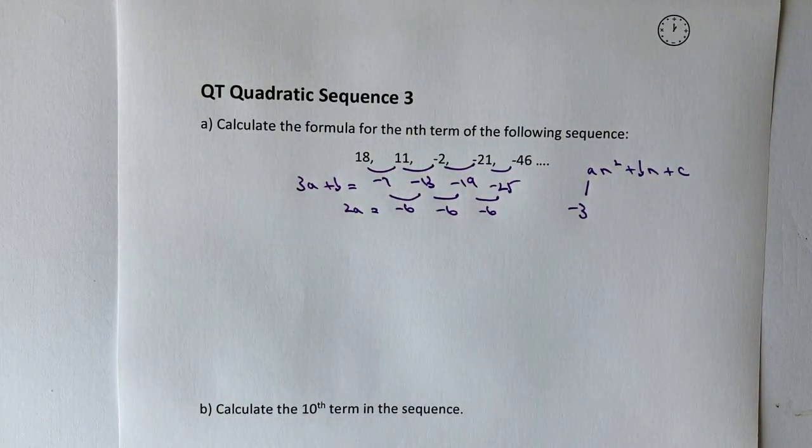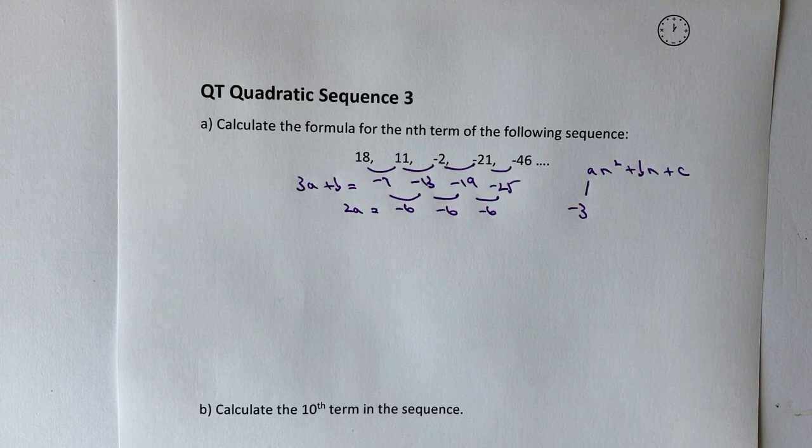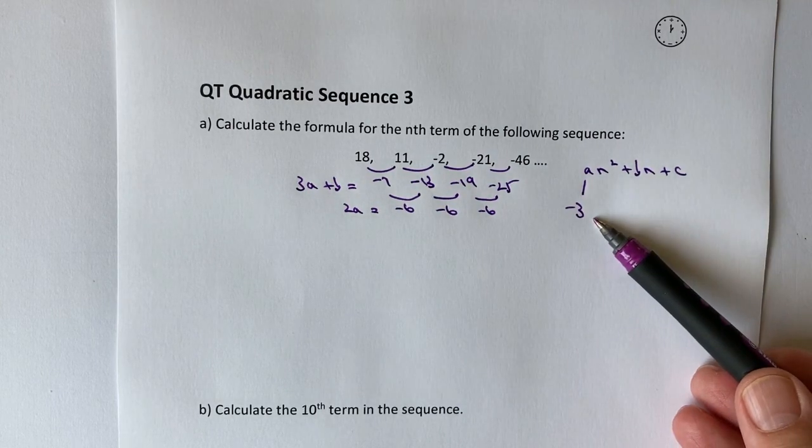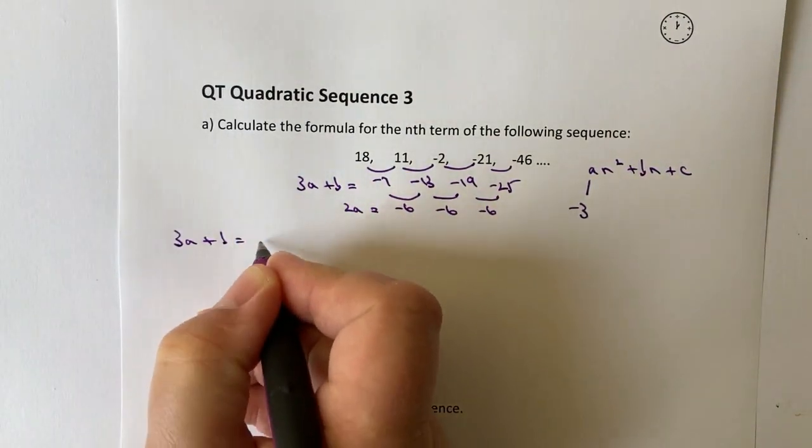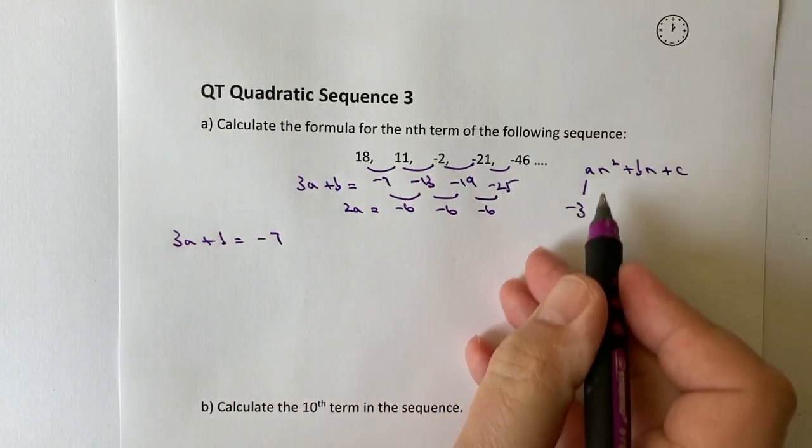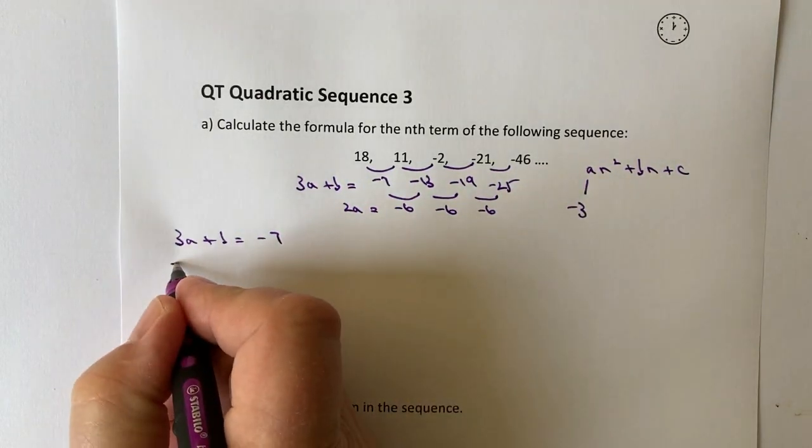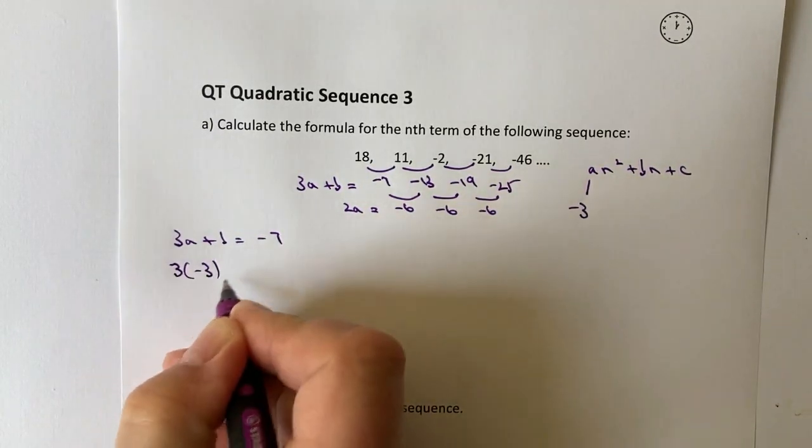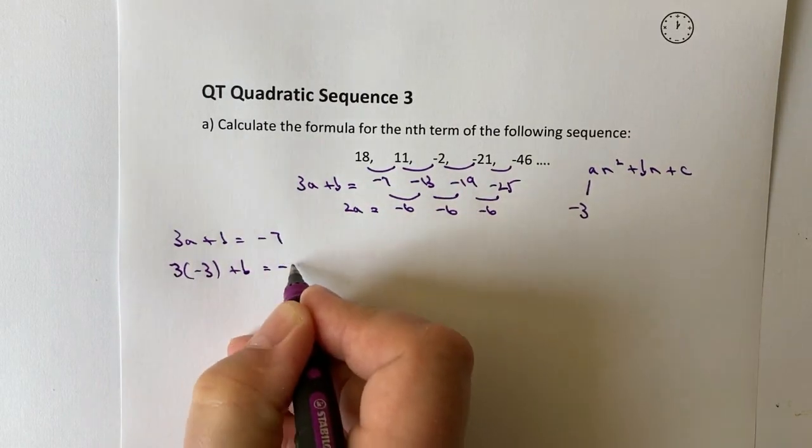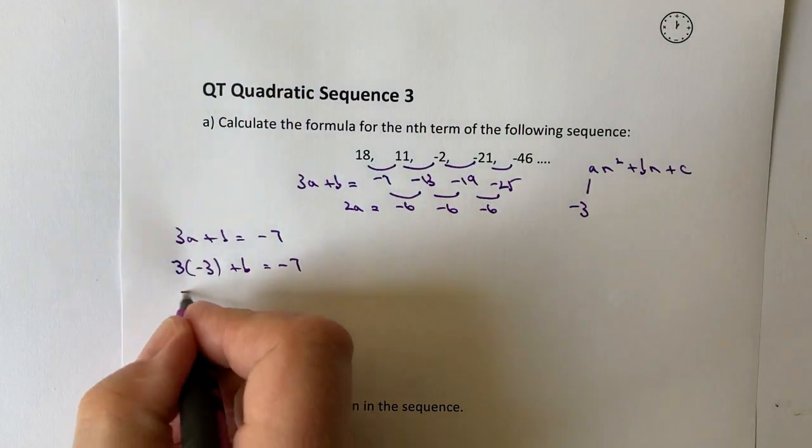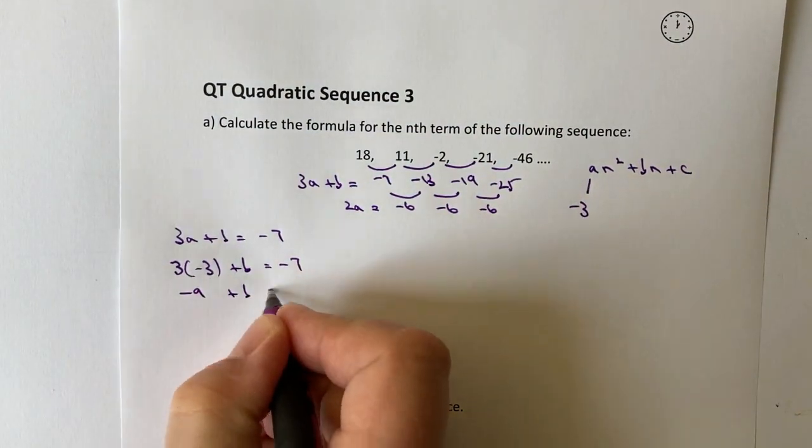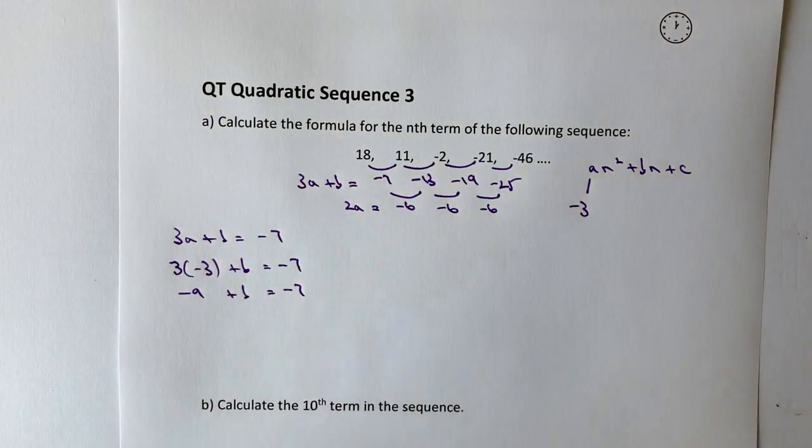So I can actually take this information and calculate my value of b because I already know my value of a. So I could write 3a plus b equals minus 7, and I know my value of a is minus 3, so I've got 3 times minus 3 plus b equals minus 7. Well 3 times minus 3 is going to be minus 9 plus b equals minus 7.